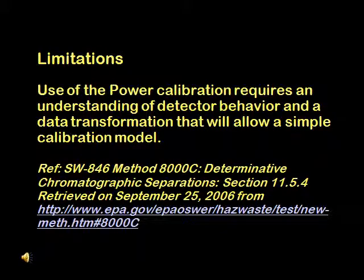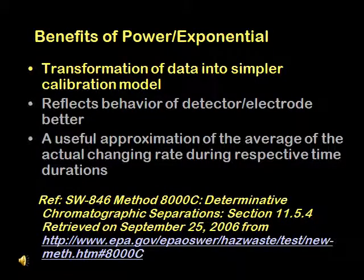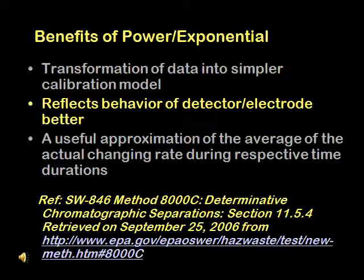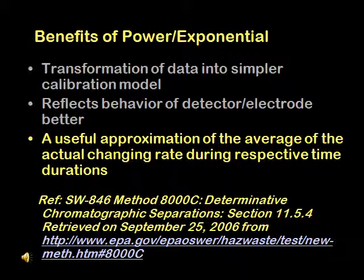Use of the power calibration requires an understanding of detector behavior and a data transformation that will allow a simple calibration model. The benefits of using a power or exponential calibration is that the transformation of data into a simpler calibration model makes solving the calibration easier. It can reflect the behavior of the detector or electrode better, and the calibration models provide a useful approximation of the average of the actual changing rate during respective time durations.